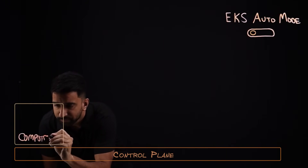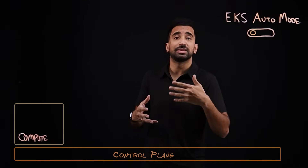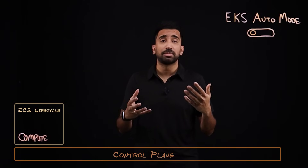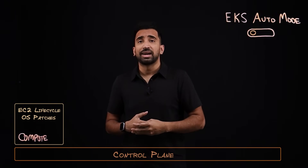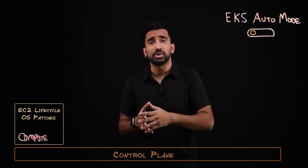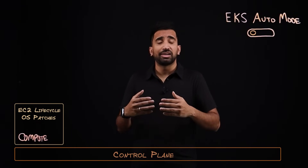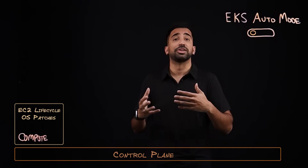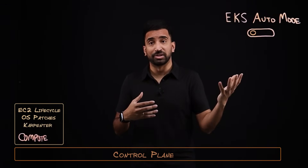On the compute side, this includes things like instance lifecycle management — EC2 instances — as well as operating system updates and patching for those instances. In addition, instance selection itself: which instances do you want to use, using Graviton and Spot, and auto-scaling of those to make sure that you're being efficient. Customers may be using tools like Karpenter here.